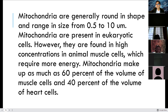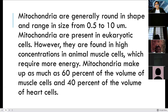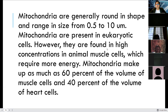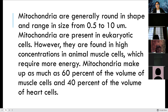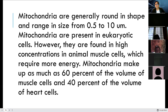Mitochondria are generally round in shape and range in size from 0.5 to 10 microns. Mitochondria are present in eukaryotic cells; however, they are found in high concentrations in animal muscle cells because muscles require more energy — more oxygen and more ATPs.